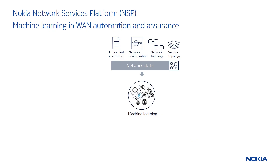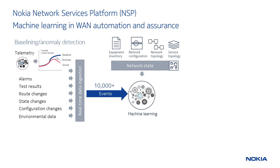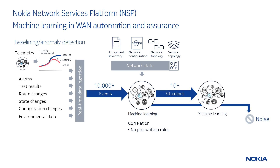I'll start with an overview of the new application that we're building for the NSP. It takes a number of inputs, including things like static network data like network topology and inventory. It also takes dynamic data like a number of different event types, including configuration changes, alarms, and anomaly events. These events are inputted into machine learning algorithms which correlate the events from tens of thousands of events to a handful of situations using no pre-written correlation rules.